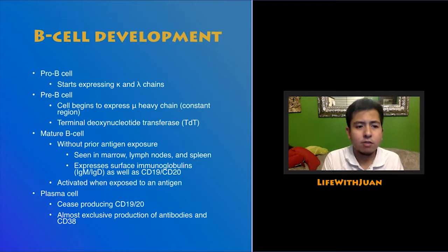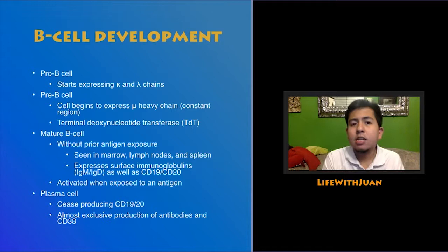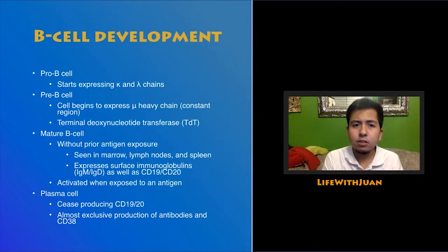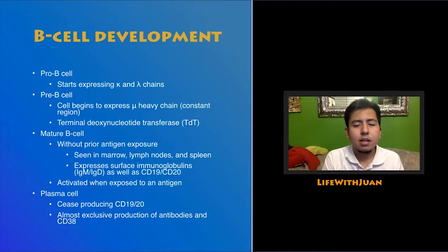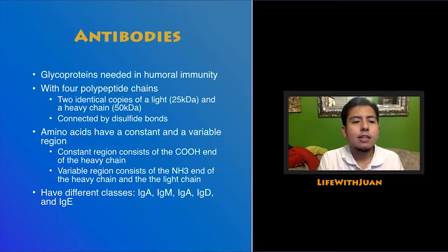After that, the pre-B cell transforms into a mature B cell. A mature B cell has not yet been exposed to antigens and therefore still expresses surface immunoglobulins — IgM and IgD — displayed on its surface. These can be found in your bone marrow, spleen, and lymph nodes. When exposed to complementary antigens, they are activated and transformed into plasma cells. Plasma cells cease production of CD19 and CD20 and start exclusive production of antibodies as well as CD38.